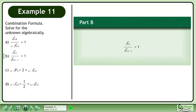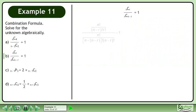In Part B, find n in n choose r over n choose n minus r equals 1. Expand the numerator and denominator using the combination formula.